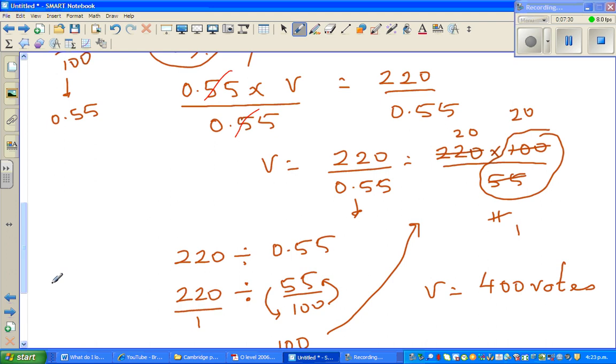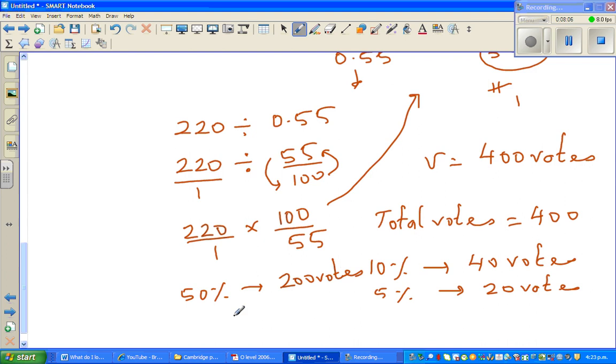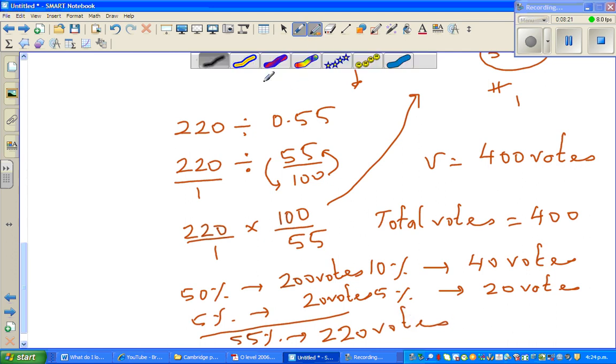Now to confirm your answer. It's always good to confirm your answer. So we are saying that total votes is 400. So just to do it fast. So what is 10 percent? 10 percent of this is 110, which is 40 votes. So what is 5 percent of this? 5 percent is half of this, which is 20 votes. Now what is 50 percent? 50 percent is half of this, which is 200 votes. So, and 5 percent is 20 votes. So we have confirmed the answer. 55 percent is 220 votes. So you can be quite pleased with your answer. And so you can give yourself, say, 5 smiley face. See you in the next week.